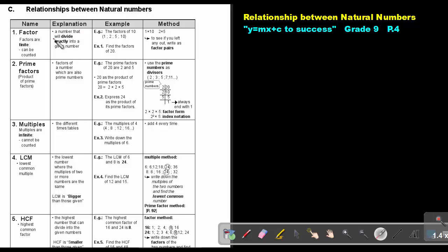Let's start with factors. A number that will divide exactly into a given number. So if I say the factors of 10, 1 can divide exactly, 2 can, 5 can, as well as 10. And to make sure you are not leaving one out, write as factor pairs. That means 1 times 10 is 10, 2 times 5 is 10.